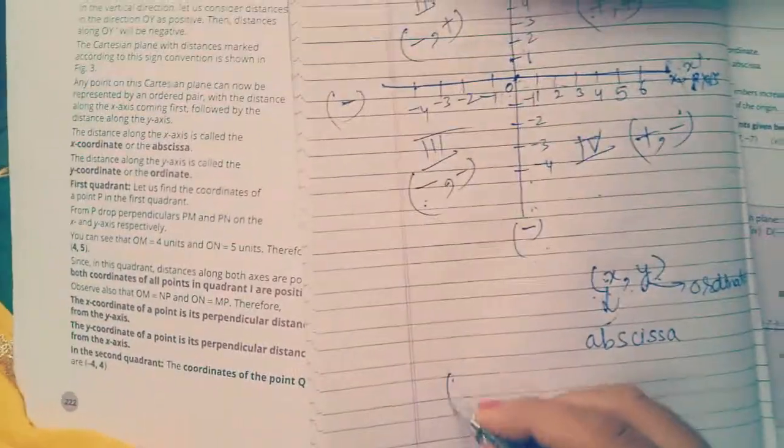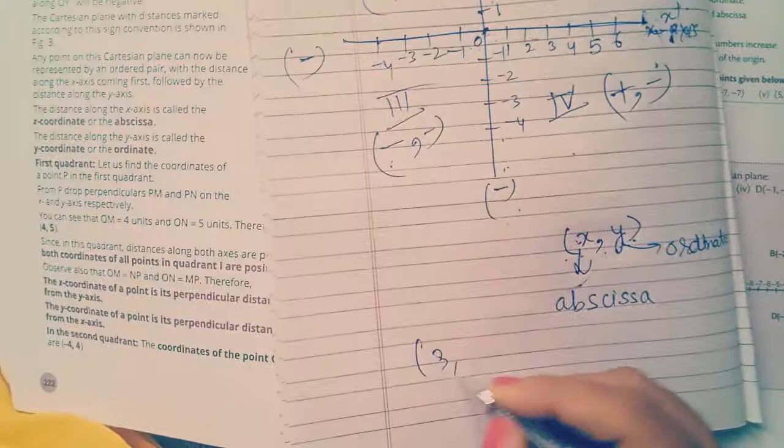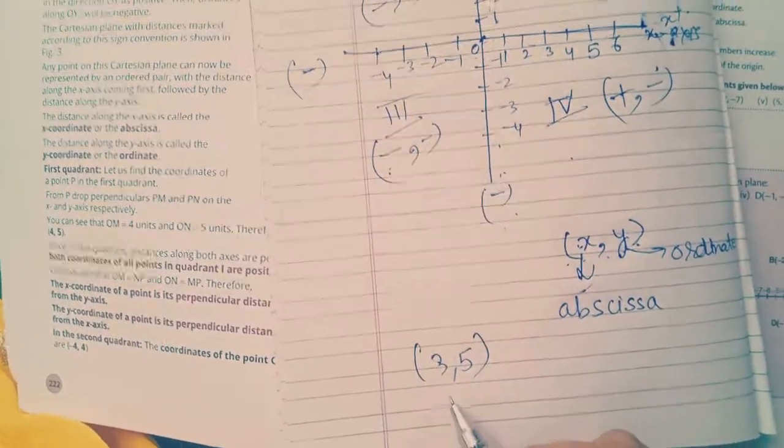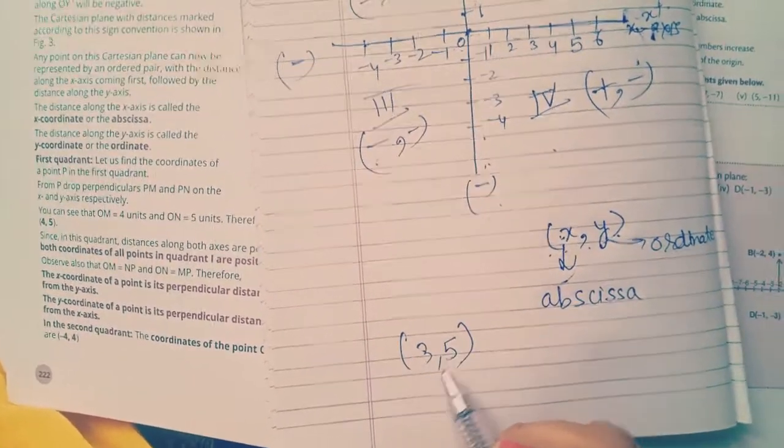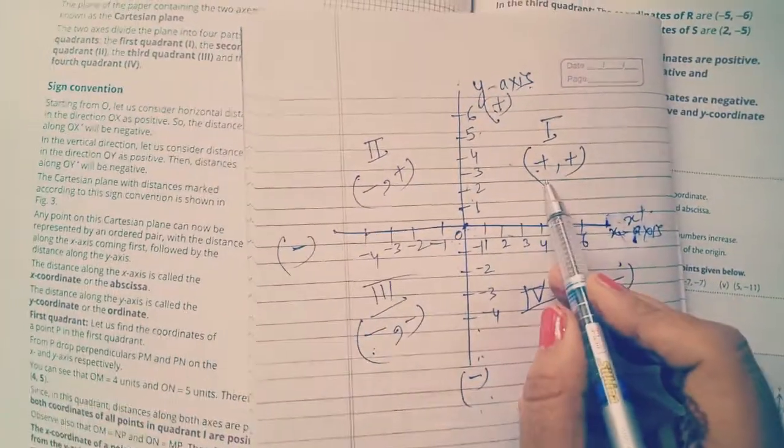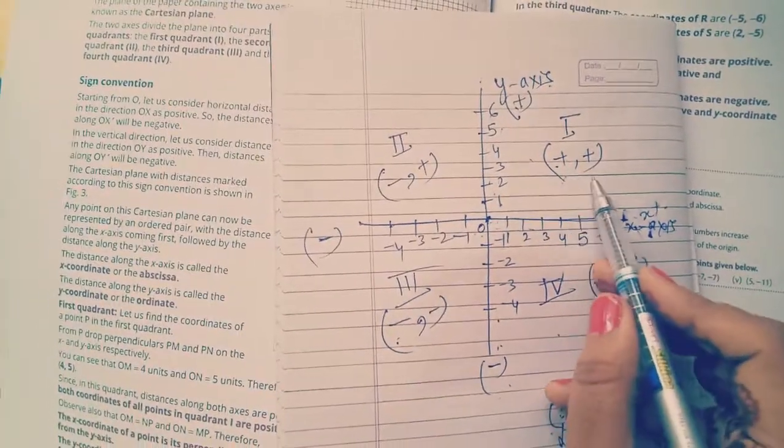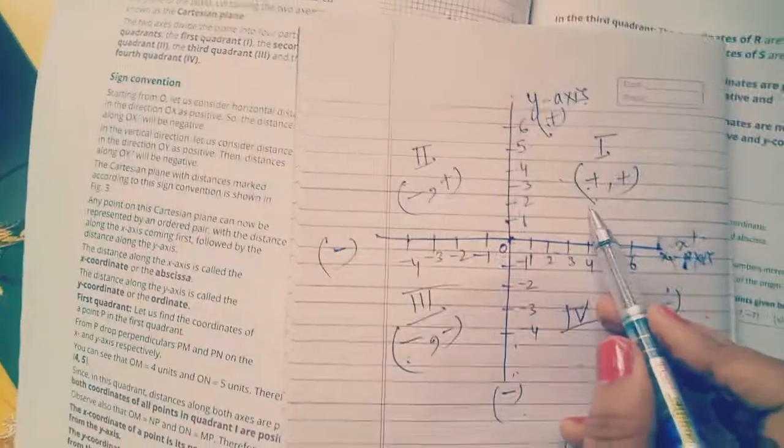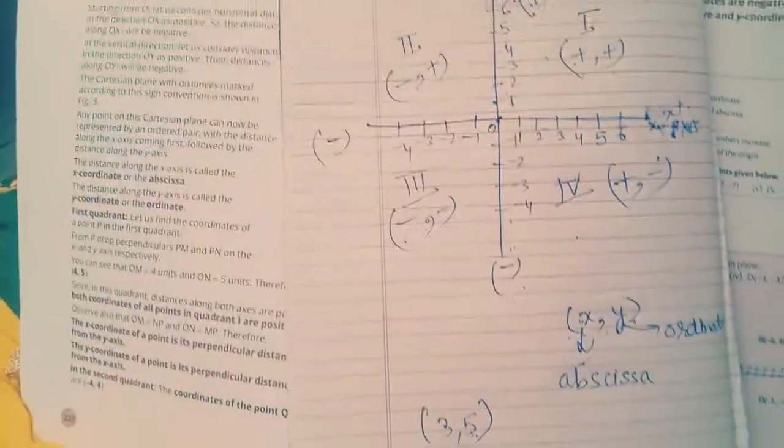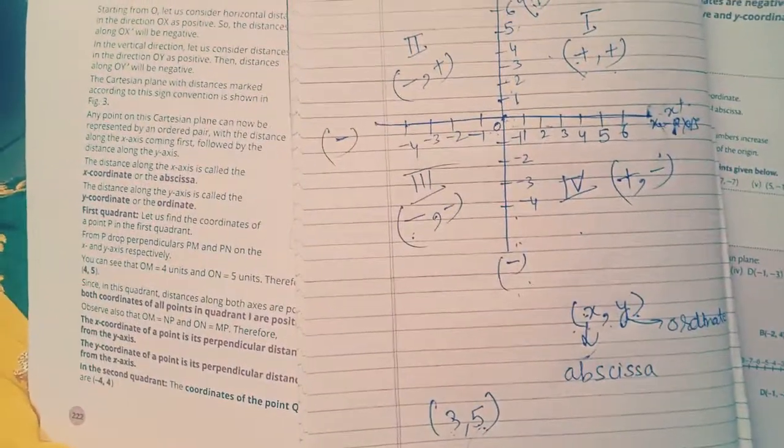Suppose I have point (3, 5). So by observation, these two points are positive. So in the first quadrant both are positive. So this point will lie in the first quadrant.